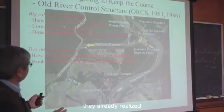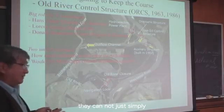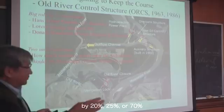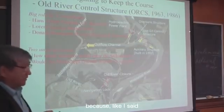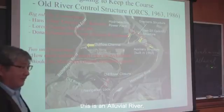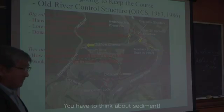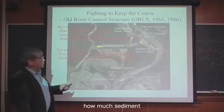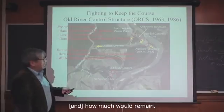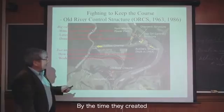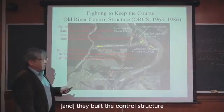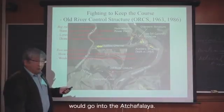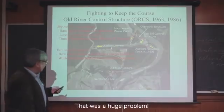But they realized they cannot simply divert a river by 20%, 25%, or 30% without considering sediment. Because this is an alluvial river — you have to think about sediment. The problem was they couldn't figure out how much sediment would run into the Atchafalaya and how much would remain. Nobody could confidently predict how much sediment would go into the Atchafalaya. That was a huge problem.